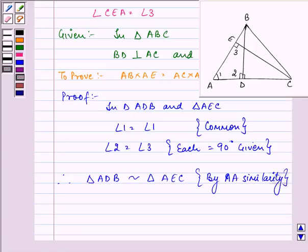Now, we know that when two triangles are similar, then DB upon EC will be equal to AB upon AC will be equal to AD upon AE. Because,